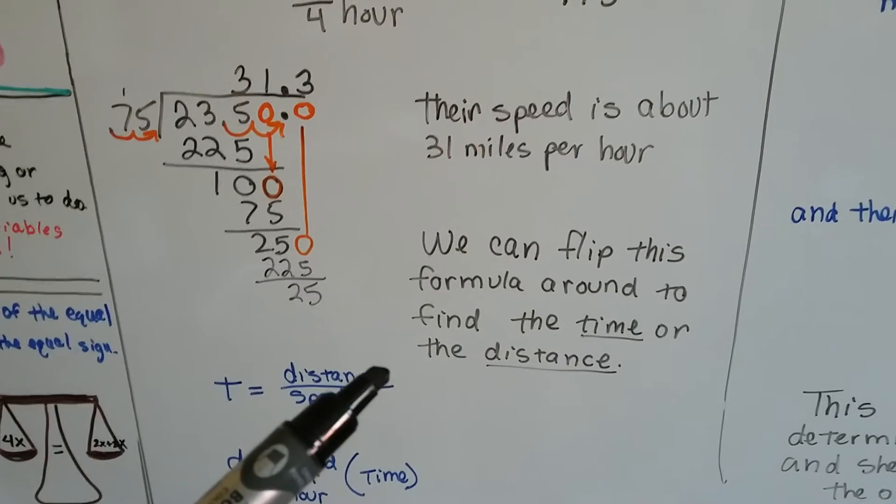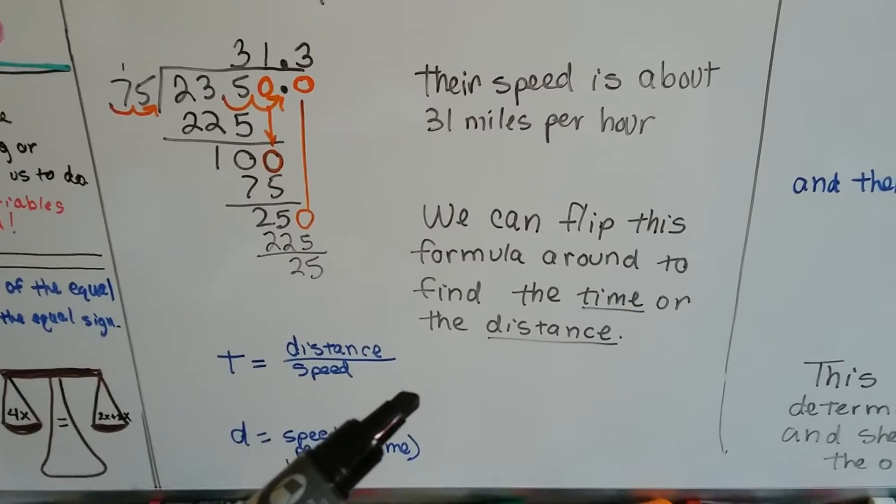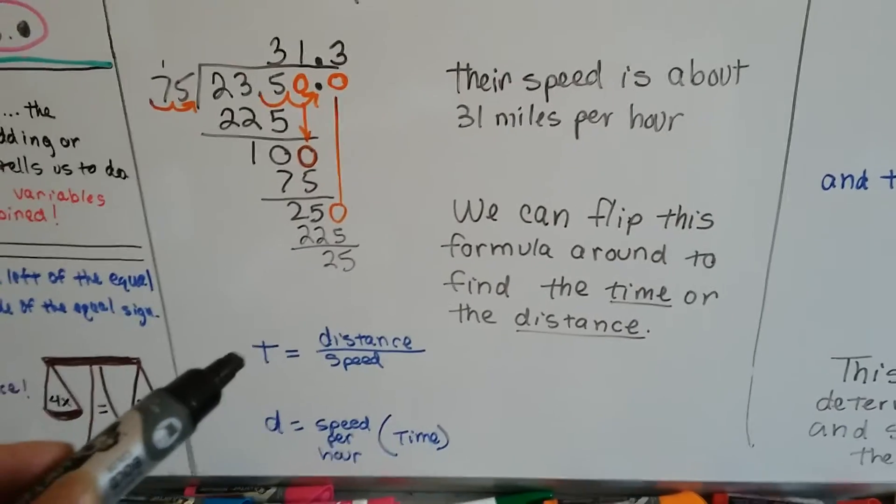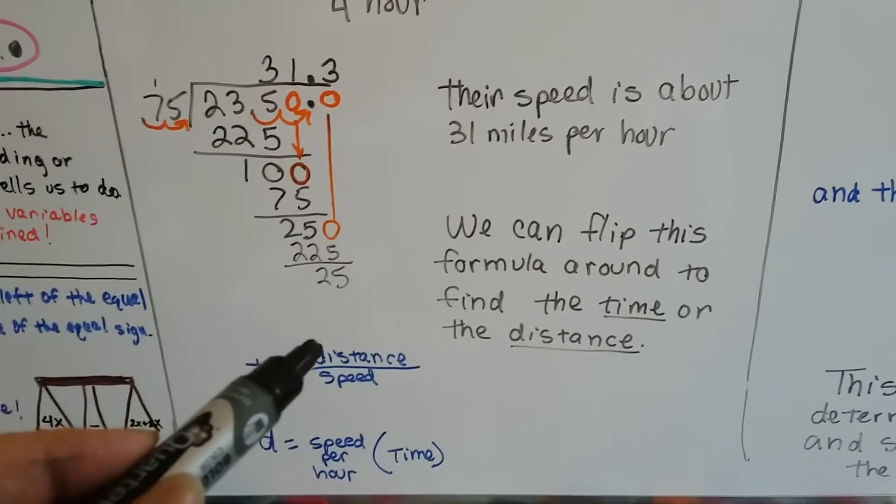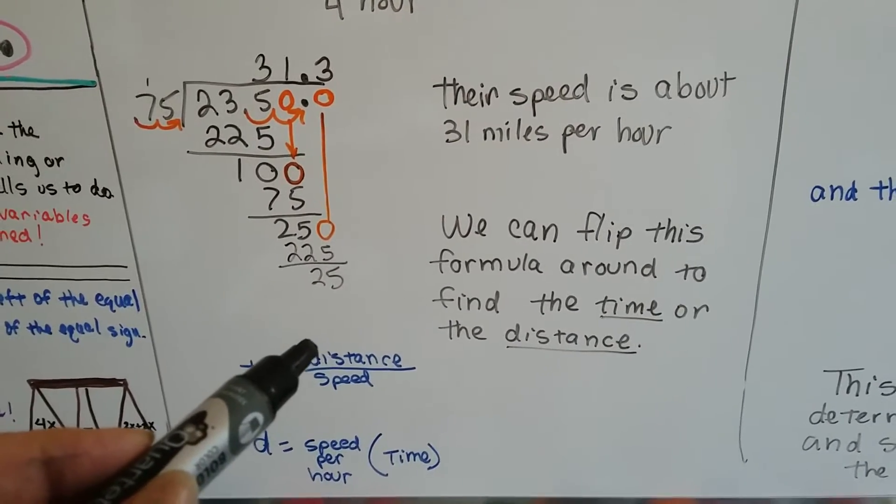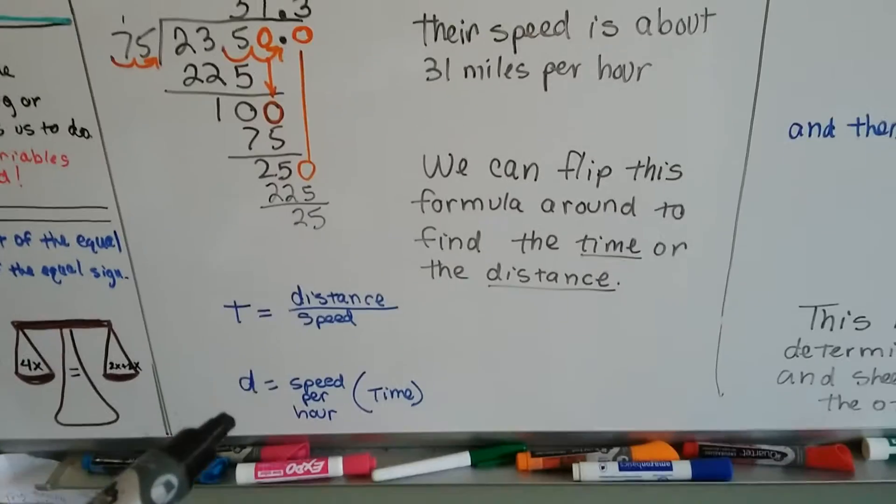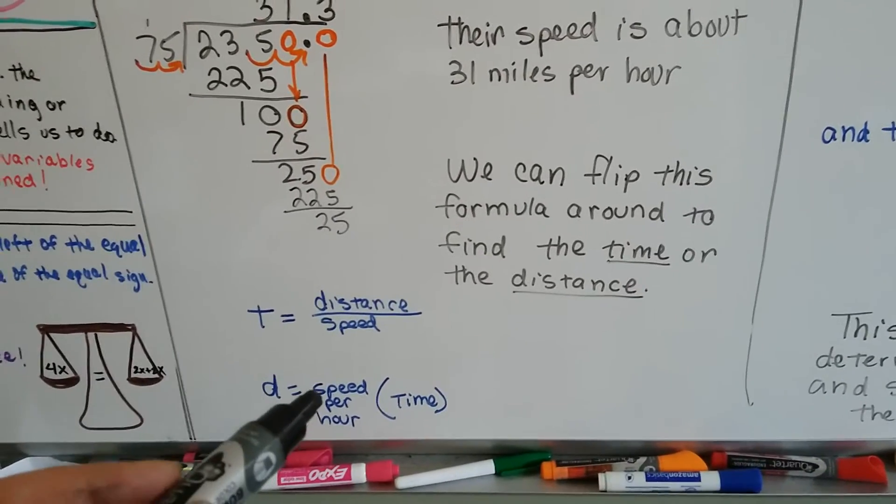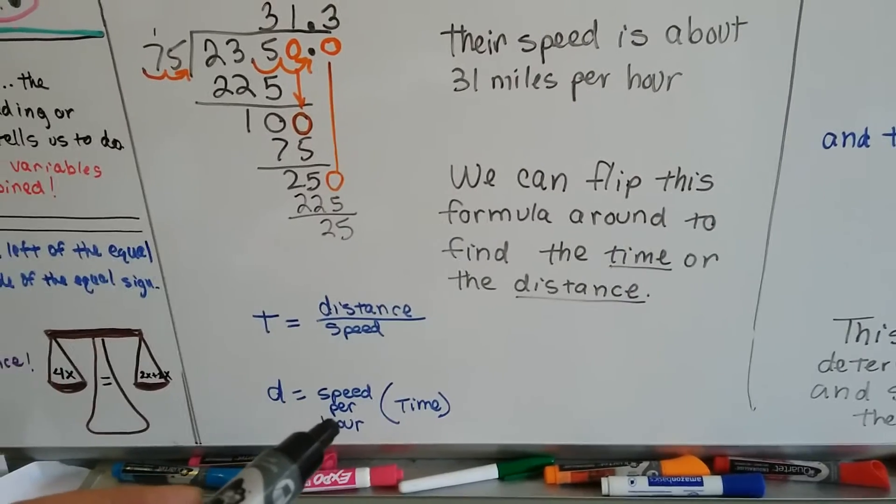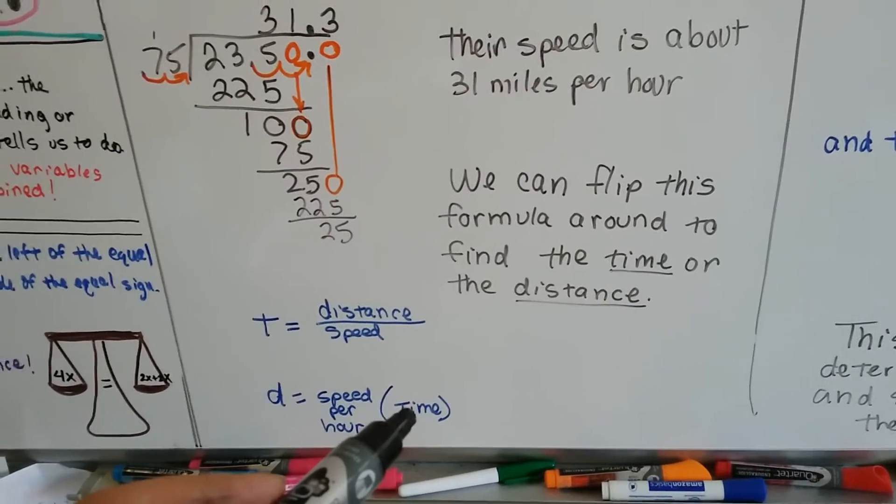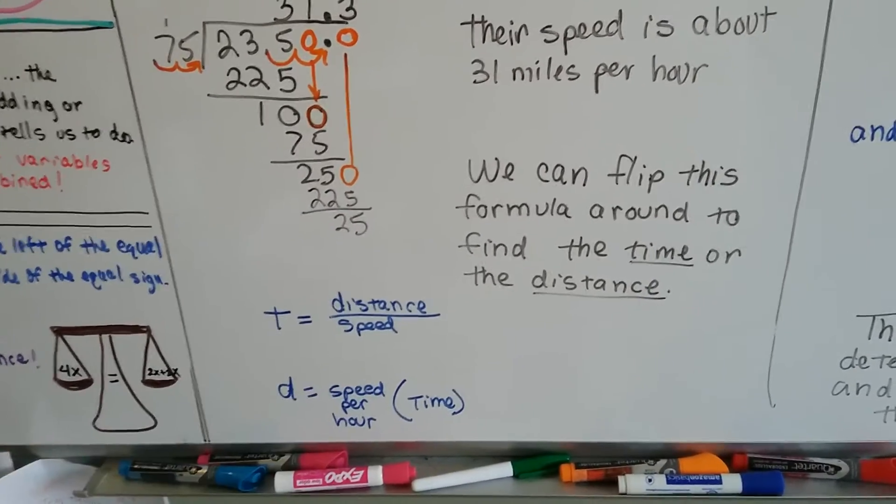Now we can flip this formula around to find the time or distance. If we want to find the time we could take the distance they drove, the 23.50, and divide it by the speed they drove. And if we wanted to find the distance we could take the speed of how fast they went and multiply it times the time and that'll give us the distance.